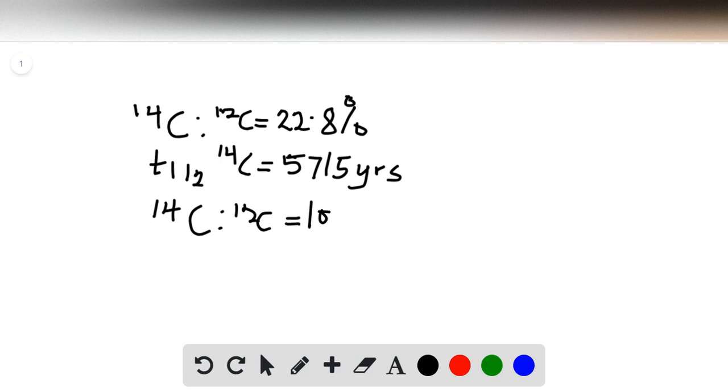For living organisms, we can represent the carbon-14 to carbon-12 ratio by 100 percent. When that organism stops living, it starts decreasing from 100 over a number of half-lives. This becomes N₀, the initial number of radioactive nuclei. The ratio of carbon-14 to carbon-12 would be 100 percent, and then at any point in time t this will become Nₜ.